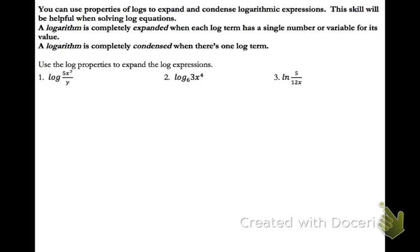Now we're going to use the properties to expand expressions. A logarithm is completely expanded when each log term has a single number or variable. First, look at the value and see what operations are going on. We have multiplication and powering in the numerator, and a denominator. Of those three things — multiplying, powering, and dividing — which affects all of the terms? All of them are being divided, so that's where we start. We rewrite this quotient as a difference.